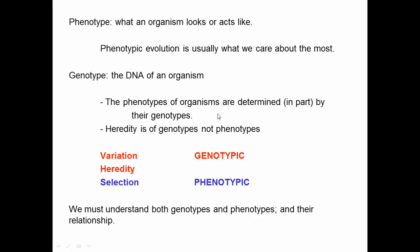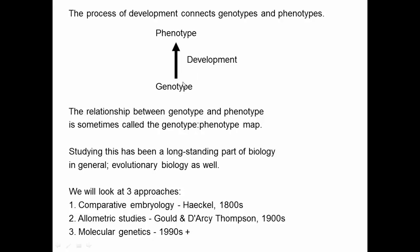There's a kind of mismatch: selection happens on phenotypes, but heredity happens on genotypes. You need selection, heredity, and variation to get an evolutionary response. The variation and heredity are genotypic traits, while selection is on the phenotype. So to really understand evolution, we need to understand both genotypic and phenotypic traits and their relationship — because it's the genotype that makes the phenotype. That process of genotype making the phenotype is development. Development connects genotypes and phenotypes and is responsible for the variation and heredity under selection.